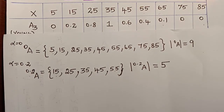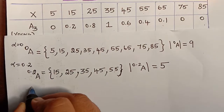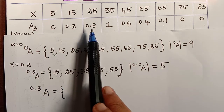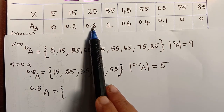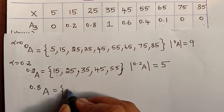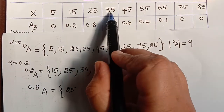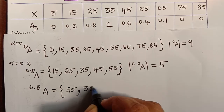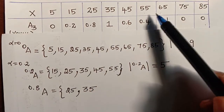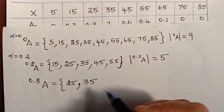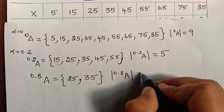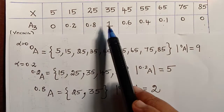For alpha equal to 0.8, the cut set contains elements with membership grade greater than or equal to 0.8. Element 25 has grade 0.8, so it qualifies; element 35 has grade 1, so it qualifies. Element 45 has grade 0.6, which is less than 0.8, so it and all remaining elements are excluded. The 0.8-cut set has only two elements, so its modulus equals 2.